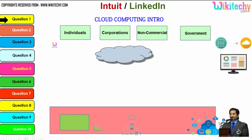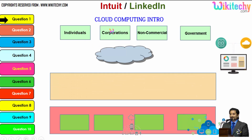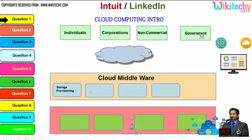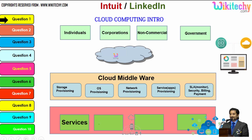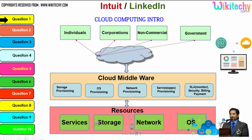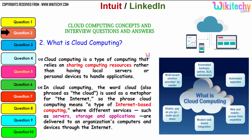There are different types of users: individuals, corporations, non-commercial people, and government. From any of these users, they are able to access services, storage, network, or operating systems via cloud middlewares. These are specialized software provided by the cloud service provider to allow end users to access resources. This is how the cloud computing architecture works.